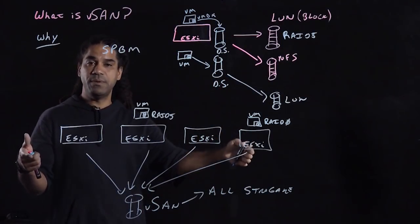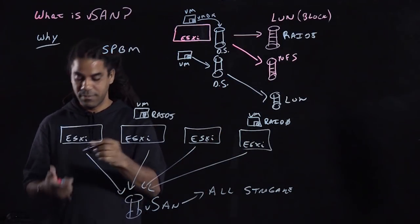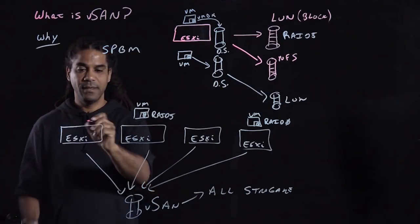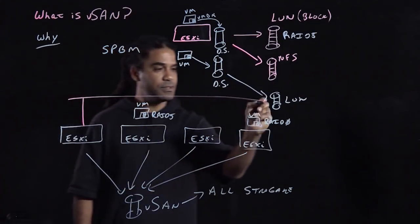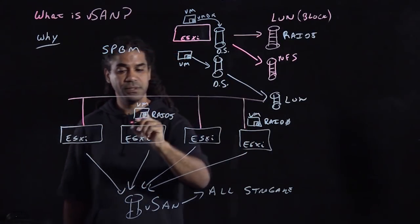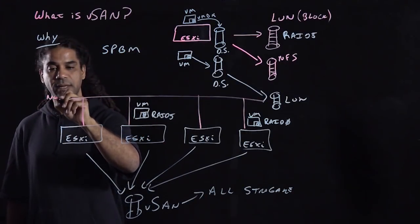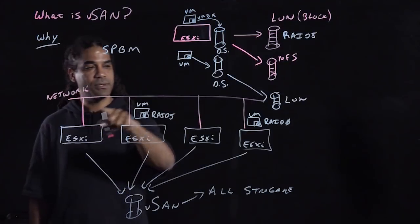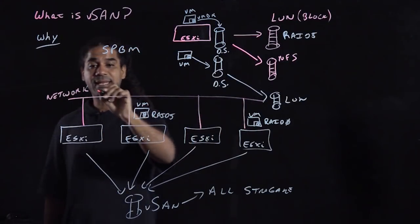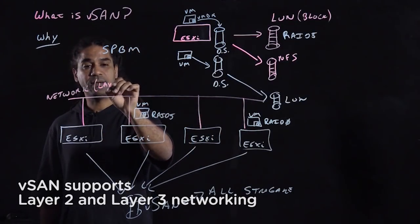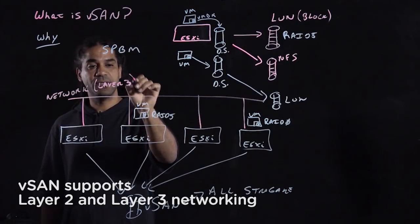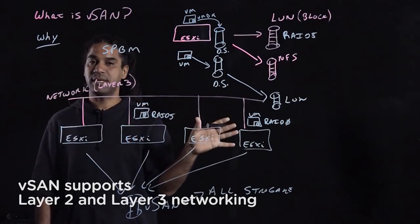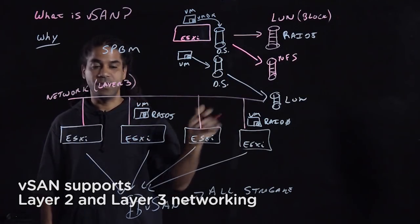Now, for the distributed component, you would need a network. So each of your hosts that are part of your vSAN cluster need to connect to a network, and they need to have Layer 3 connectivity between each other. No need for multicast, just regular IP unicast.